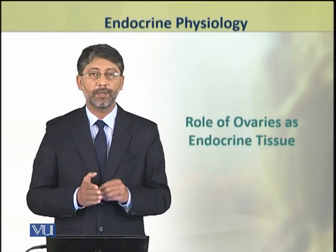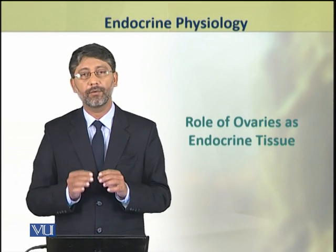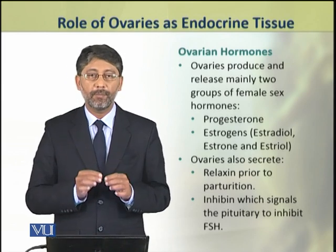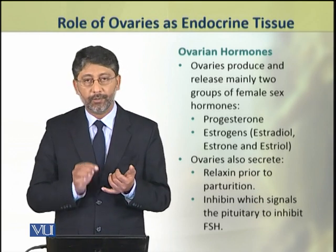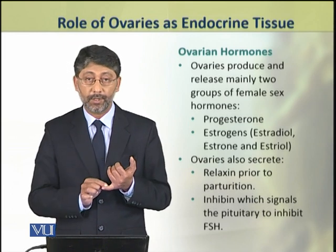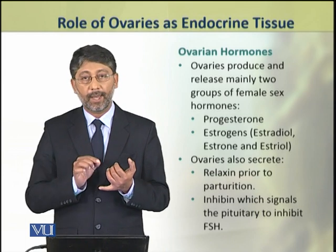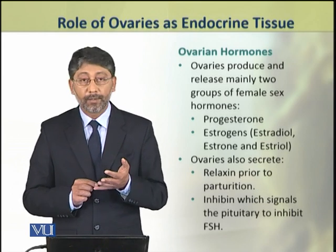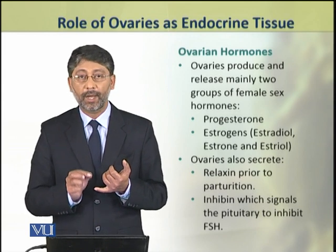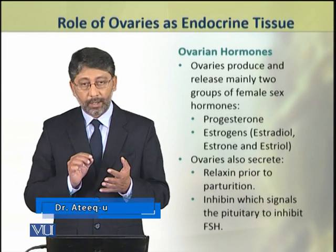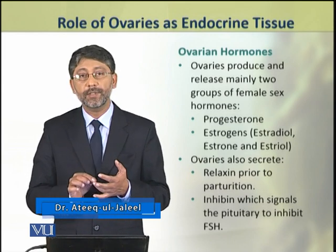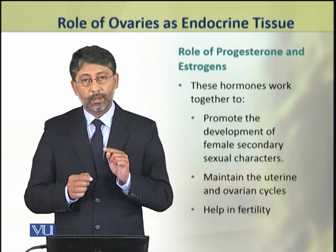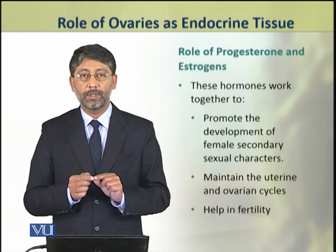Dear students, in this topic we shall discuss the role of ovaries as endocrine tissue. Ovaries produce and release mainly two groups of female sex hormones: progesterone and estrogens. Estrogens include estradiol, estrone, and estriol. Ovaries also secrete two other hormones: relaxin, which is produced just prior to parturition or childbirth, and inhibin, which signals the pituitary to inhibit the release of follicle stimulating hormone.